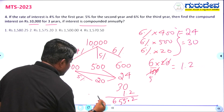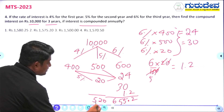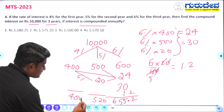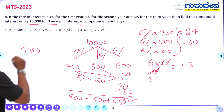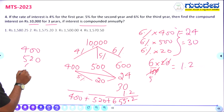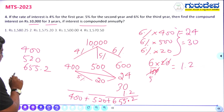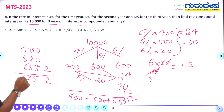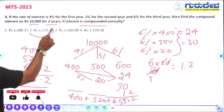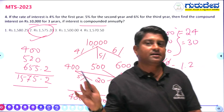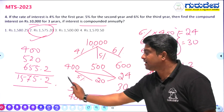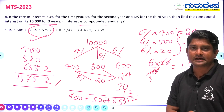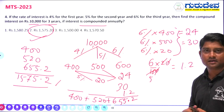First year interest: 400 rupees. Second year: 500 + 20 = 520 rupees. Third year: 655.2 rupees. Adding all three: 400 + 520 + 655.2 = 1575.2 rupees. That is the compound interest. Option number 2 is the right answer. This tree method works well for varying interest rates each year.